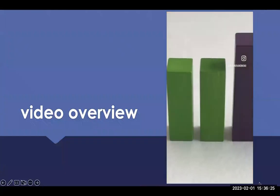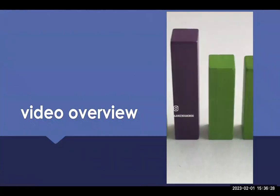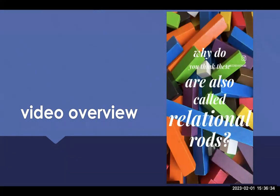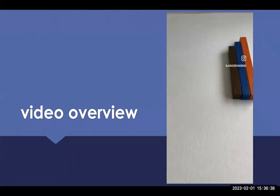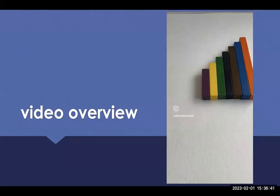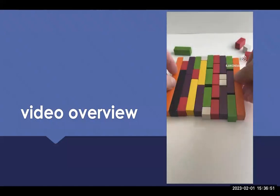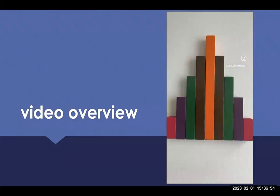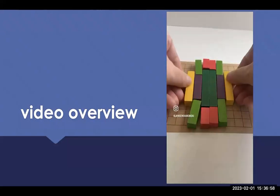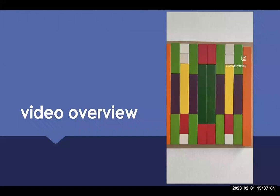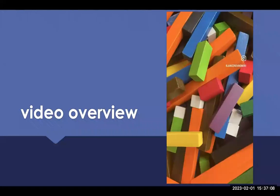This is a reel I created for Instagram. You could use them for repeating patterns — there's one example of that. They're also called relational rods because they're all in relationship to each other; they increase by a unit of one. So we can think about increasing and decreasing patterns, spirals, ways to make 10, and creating symmetrical patterns. You can use them with a 100 grid — which is the same size as the Cuisenaire rods — to create different designs, and think about fractions, ratios, percentages, and more.